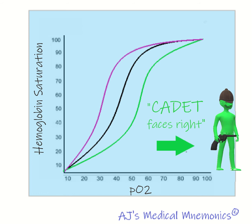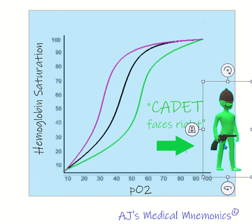We're going to discuss the conditions which shift the oxygen-hemoglobin dissociation curve to the right, also known as the Bohr effect. It's going to be represented by the mnemonic CADET faces right. This is not my mnemonic, but I've heard it and I love it, and I've shared it with others and they've loved it. So here's our cadet — this young soldier — and he is going to be turning to the right.